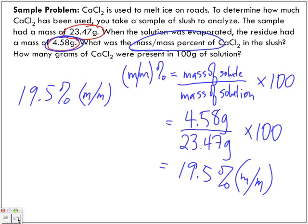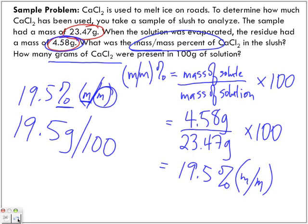Then it asks how many grams of calcium chloride were present in 100 grams of solution. It's 19.5 grams per 100 grams. So the answer in mass/mass percent is 19.5%, but in terms of how much was present in 100 grams of solution, 19.5 grams of it is dissolved in 100 grams of our entire solution.